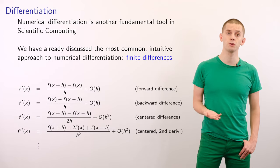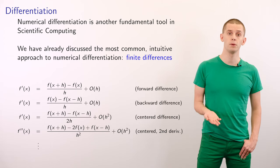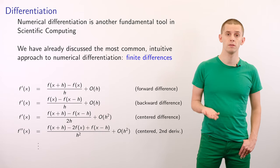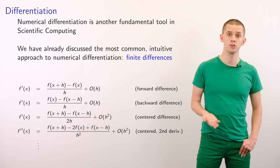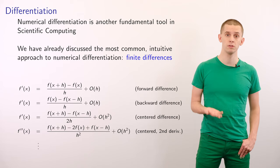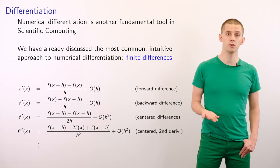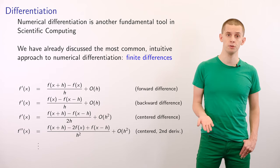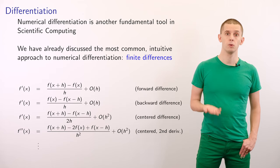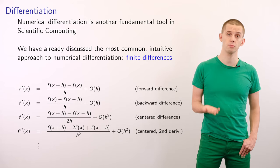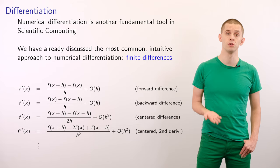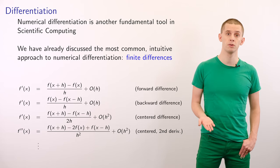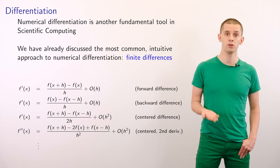Numerical differentiation is another fundamental tool in scientific computing. We've already seen the most common intuitive approach for doing this using finite differences. Suppose we have a function f and some small spacing h, then we can approximate various derivatives in terms of sampling our function f at several points that are spaced distances h away. For example, we've already seen the forward and backward difference formulas, where we take two samples of our function and we can approximate the derivative to O(h) accuracy. We can also take two samples of our function at x+h and x-h and approximate the first derivative to O(h²) accuracy. We can use another formula that can approximate our second derivative to O(h²) accuracy using three samples of our function.